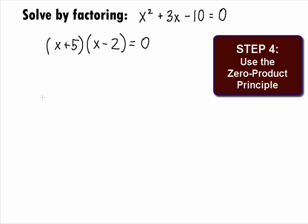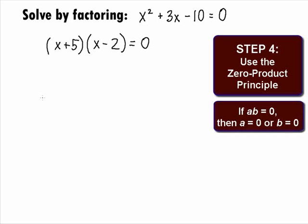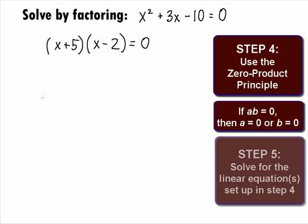In Step 4, we want to use the Zero Product Principle. This principle states that if you have a product of two factors set equal to 0, then the solution can be found by setting each separate factor equal to 0 and solving those equations. We will also go into Step 5, which is to solve the linear equations set up in Step 4.